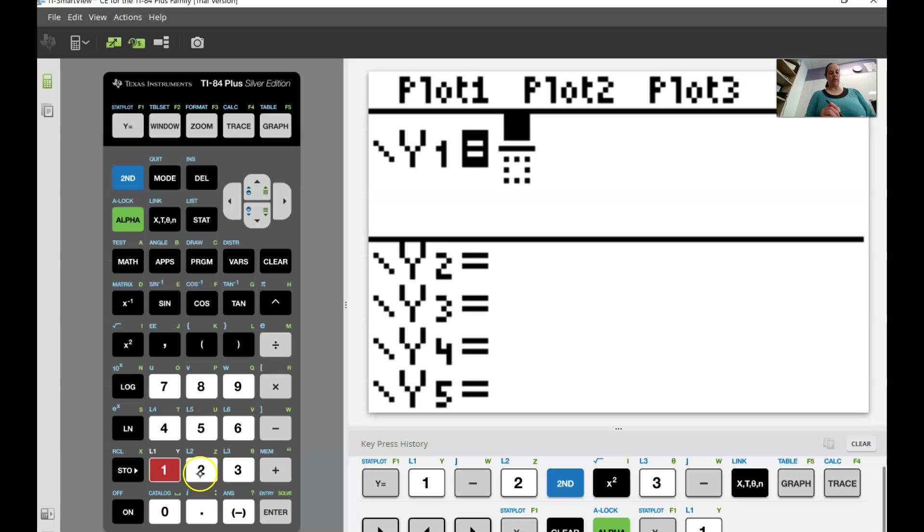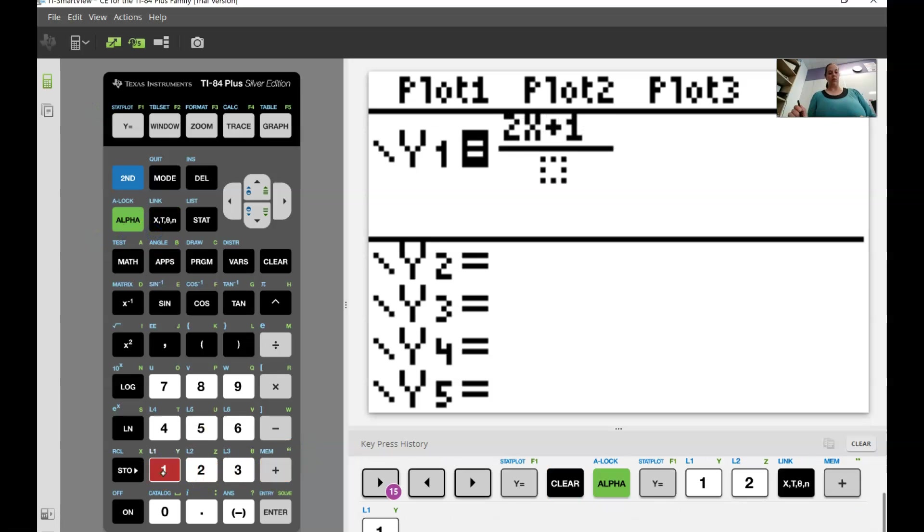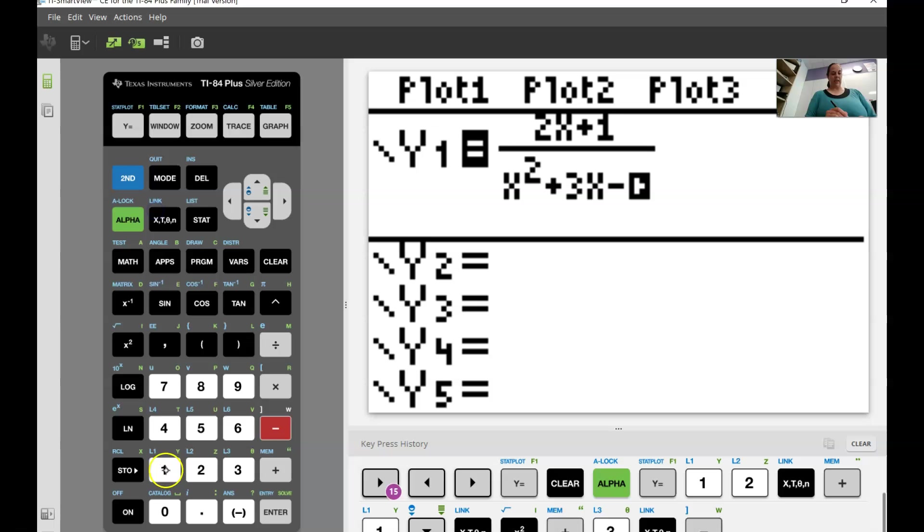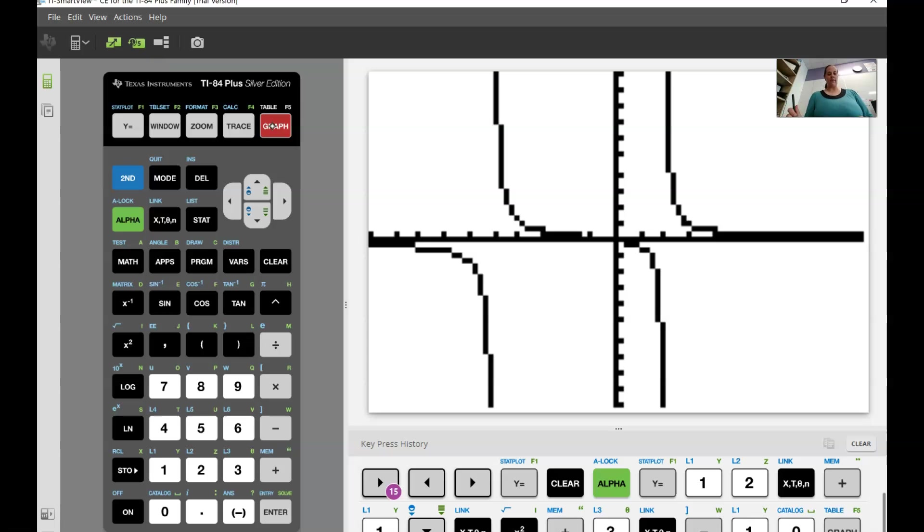So on the top, I'm going to type 2x plus 1 for my numerator. Hit the down arrow to get to the denominator. And then have x squared, my little squared key, plus 3x minus 10. So there's my equation. Once again, let's hit graph. See what we get.